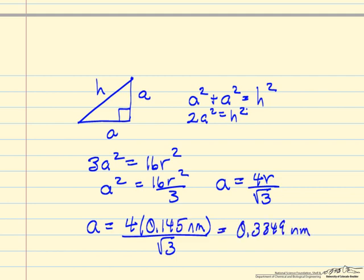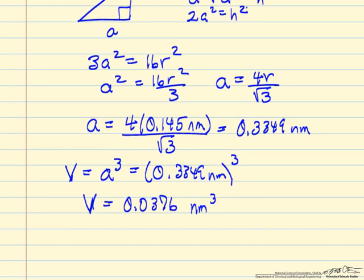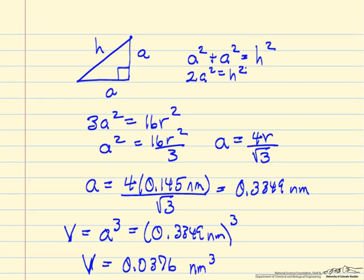So we now have the unit cell dimension. So we can calculate the volume, since it's a cube, it's just A cubed, so this dimension cubed. So we have the volume, and in the cube, in the body-centered cubic structure, we have 2 atoms per unit cell.